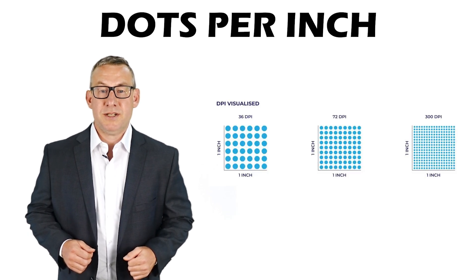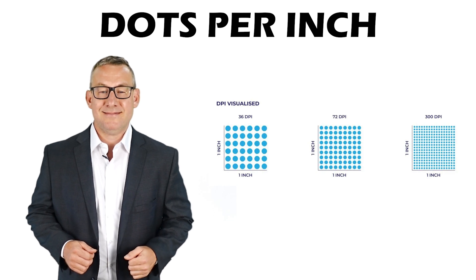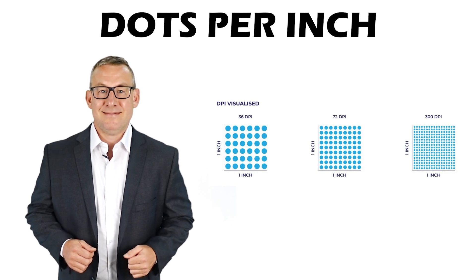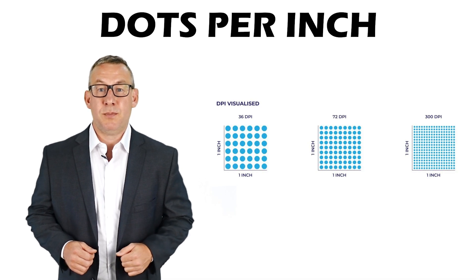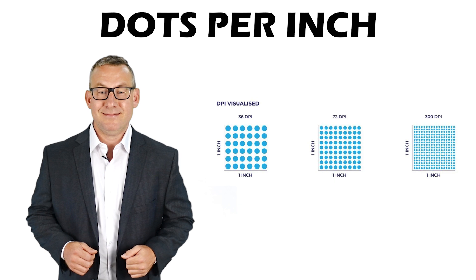Dots per inch, or DPI, is the amount of cells that exist per inch in a raster or image resolution.